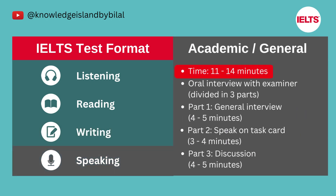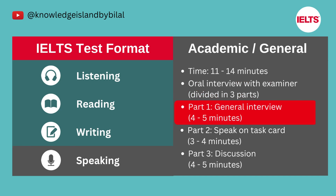The speaking test is the same for both Academic and General Training. It consists of an oral interview between the test taker and an examiner, lasting about 11 to 14 minutes. There are three parts, each fulfilling a specific function in terms of interaction pattern, task input, and test taker output. Part One involves an introduction and interview with general questions on familiar topics such as home, family, work, studies, and interests. Questions are taken from a script to ensure consistency, and this part usually lasts four to five minutes.